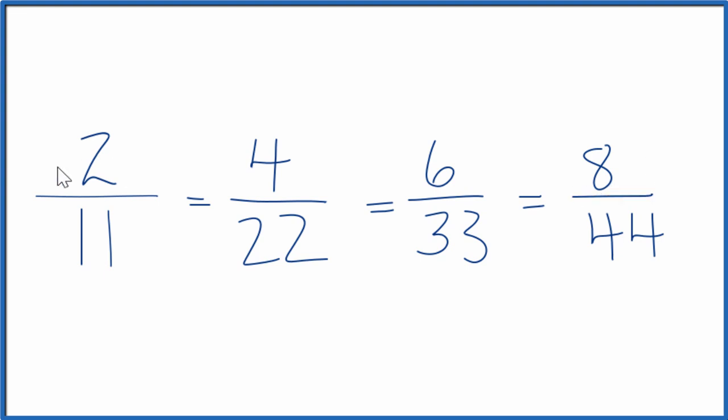And if you divide 2 by 11, 4 by 22, 6 by 33, or 8 by 44, you get the same decimal. They're equivalent fractions. It's just the 2 elevenths that's in lowest terms.